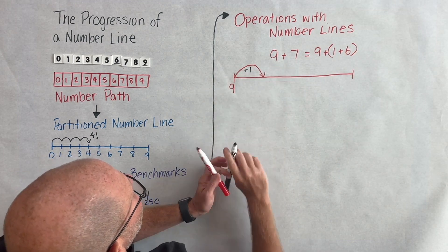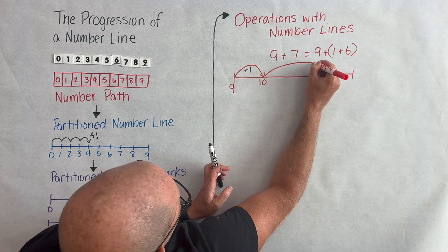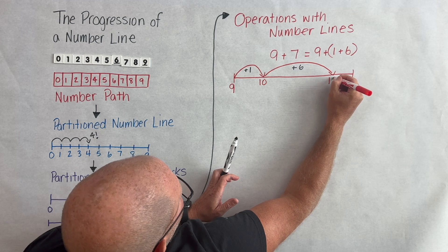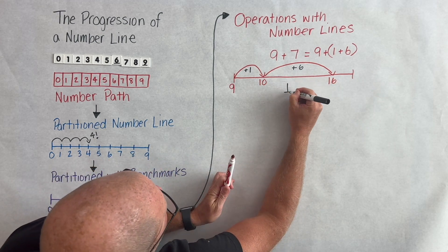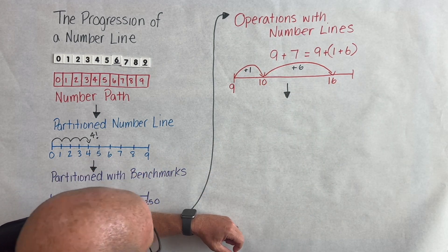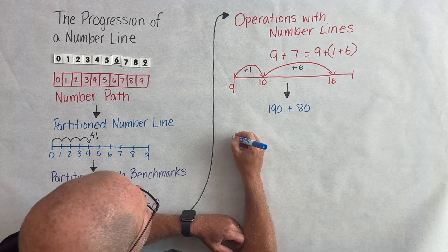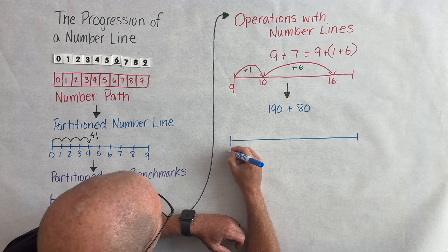Here what students are doing is they're associating 1 from the 7, giving it to the 9 to make a 10, and then they jump that leftover 6 to get to 16. This is a really abstract understanding for students, but maybe they don't start with this on an open number line.